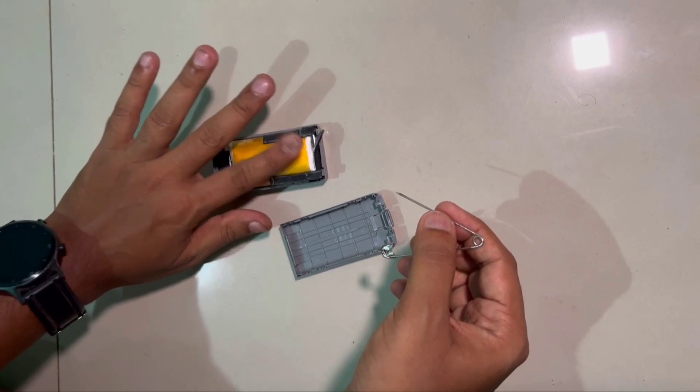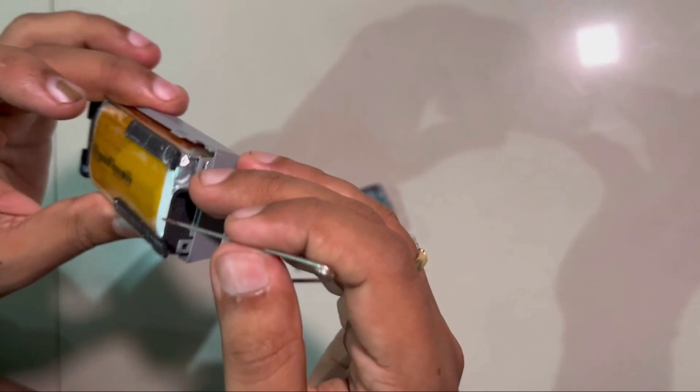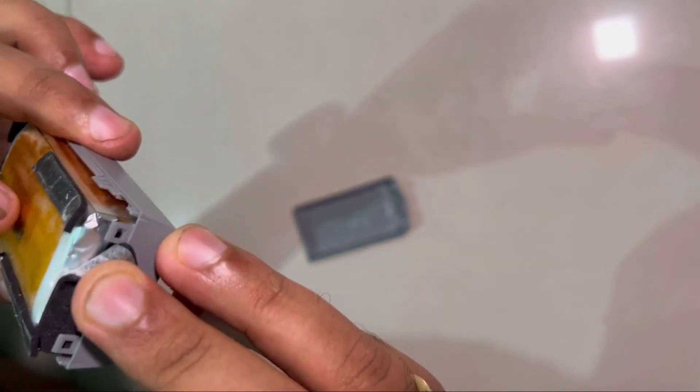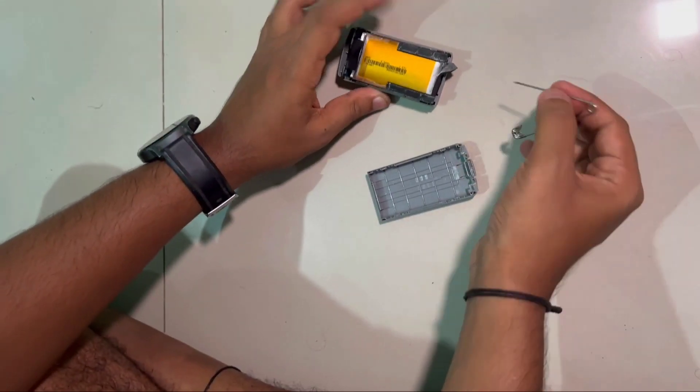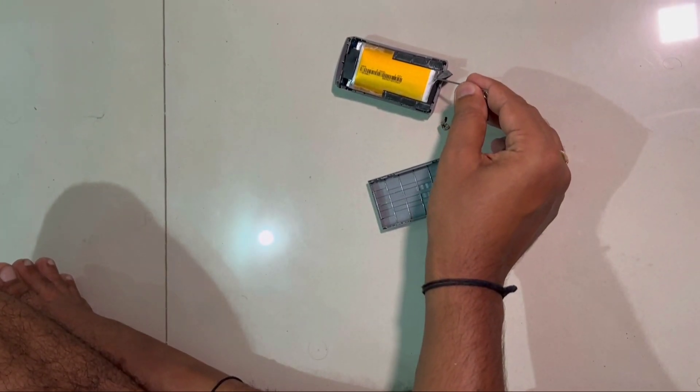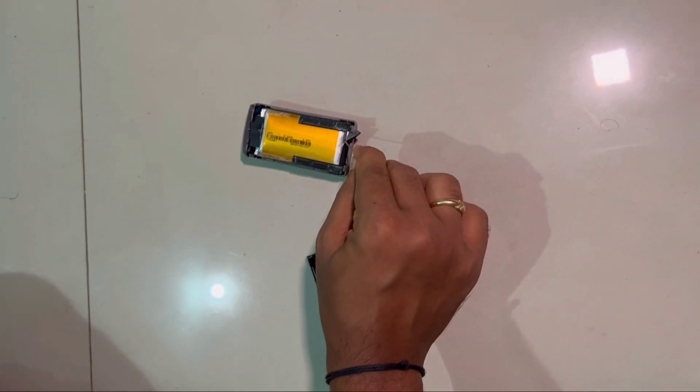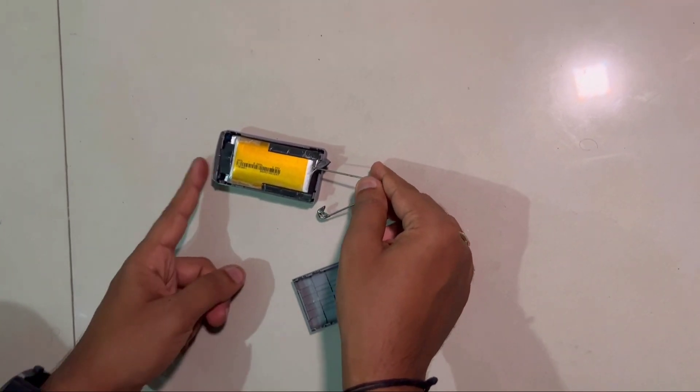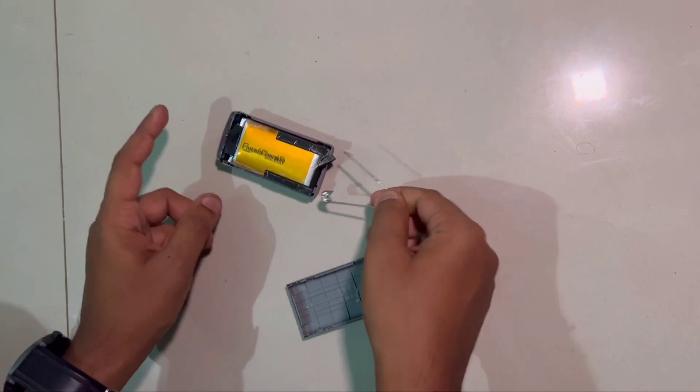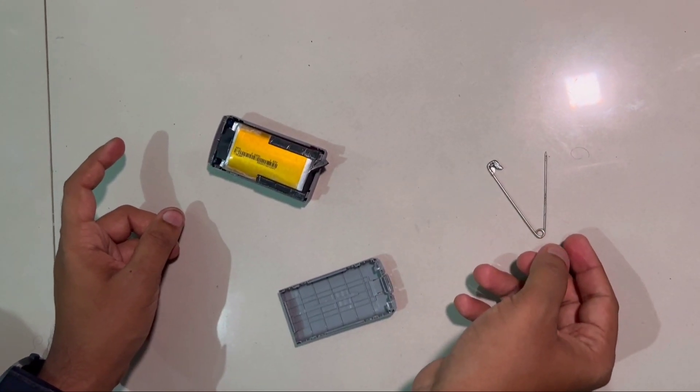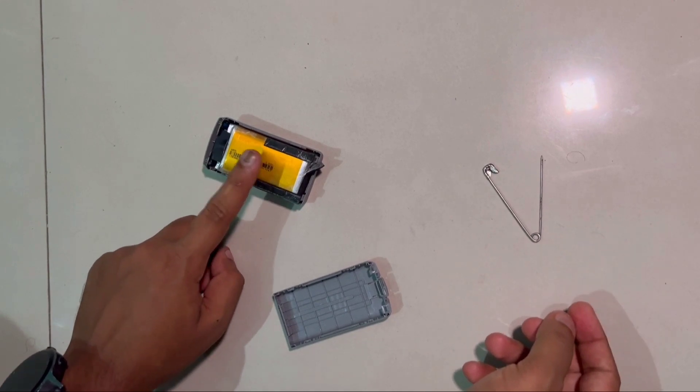Ensure you're not putting too much pressure with the pin. Just take off the top layer and make a small puncture on one cell. Why only one cell? Because if you puncture both cells, there's a high chance the battery will start misbehaving or malfunctioning.